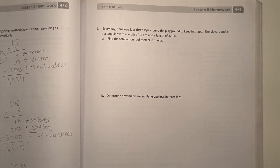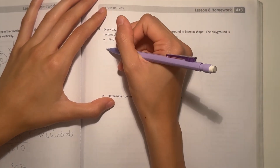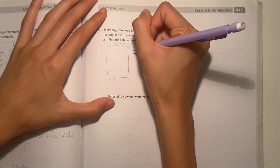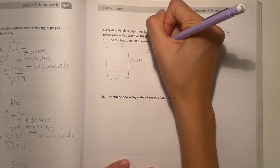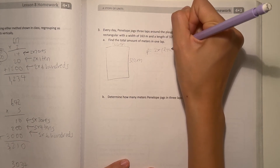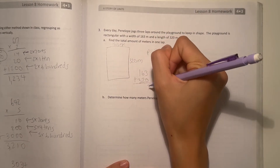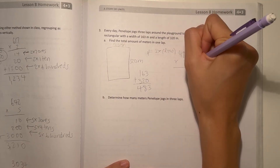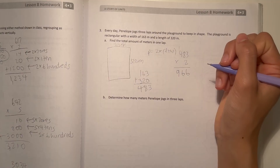Number 3: Penelope jogs 3 laps around the playground every day to keep in shape. The playground is rectangular with a width of 163 meters and a length of 320 meters. Find the total amount of meters in one lap. To find that out, we need to find the perimeter. Perimeter equals 2 times the sum of length plus width. So that's 2 times (163 + 320), which is 2 times 483. 3 times 2 is 6, 8 times 2 is 16, 4 times 2 is 8 plus 1 is 9. So 966.